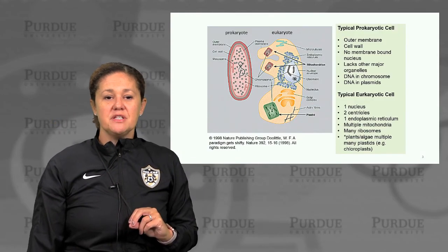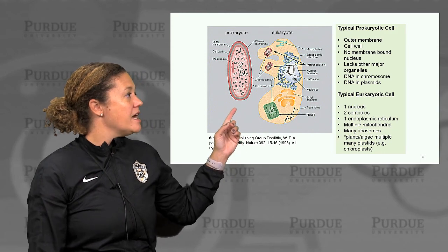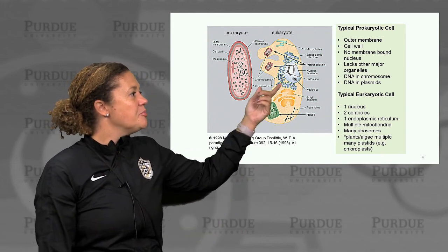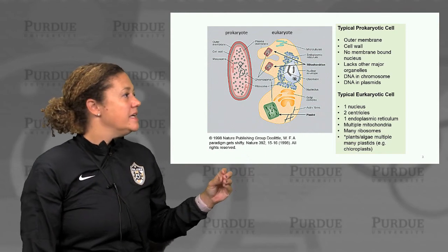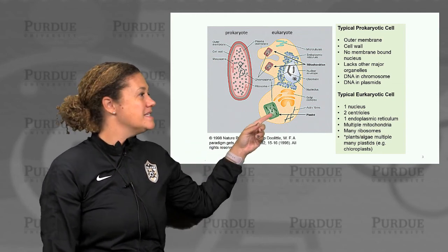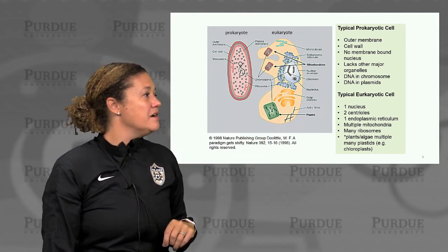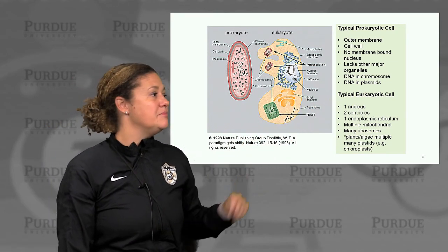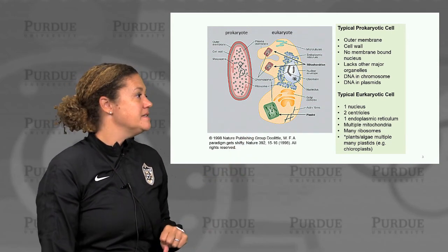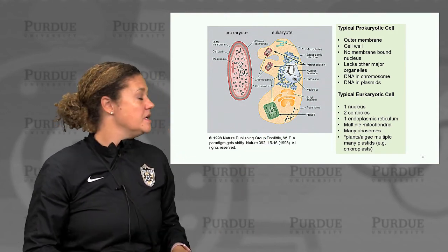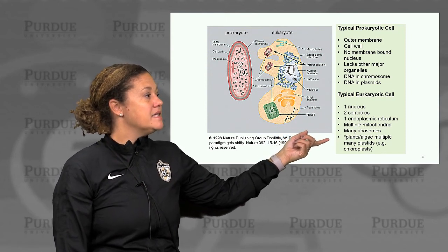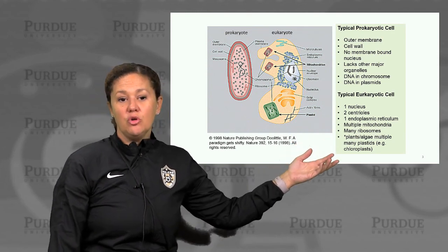Let's remind ourselves of some structural differences between prokaryotes, such as E. coli and other bacteria, and eukaryotes, such as the cells in our body. A typical prokaryotic cell has an outer membrane and a cell wall, but no membrane-bound organelles, no membrane-bound nucleus, and lacks many other major organelles. The DNA is in chromosomes as well as in plasmids. A typical eukaryotic cell has one membrane-bound nucleus, two centrioles, endoplasmic reticulum, multiple mitochondria, many ribosomes, and plants and algae have multiple plastids, for example chloroplasts.